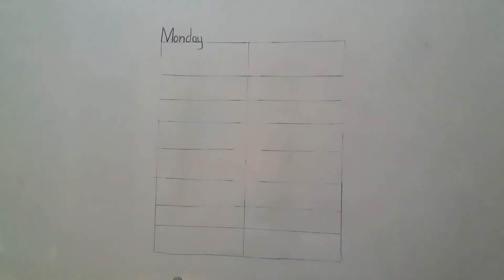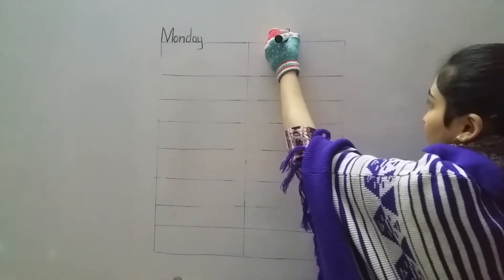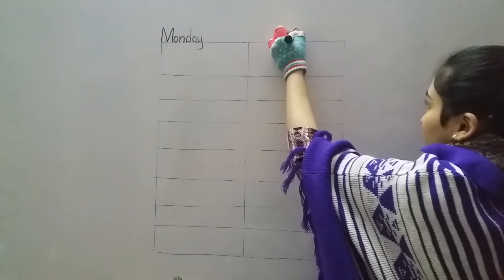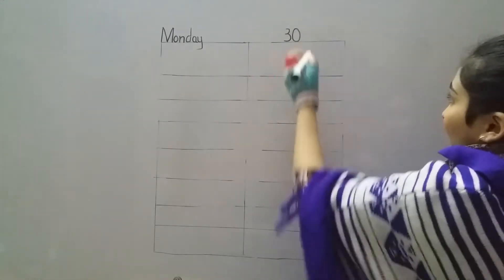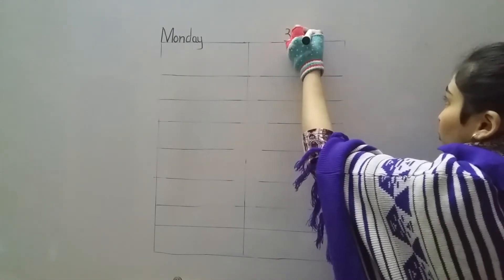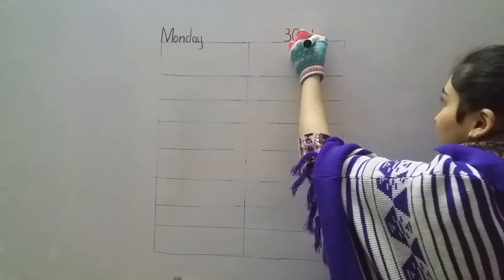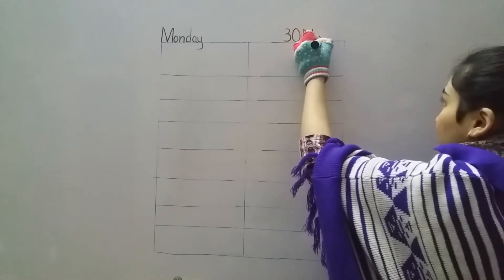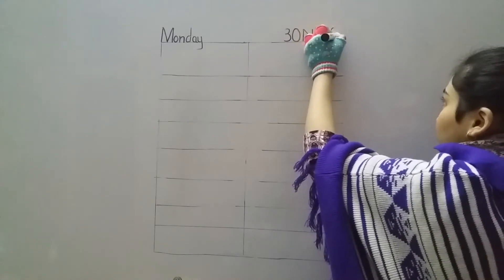Now when we are done with our day, we will write the date. Today is 30 — 3, 0 — 30. And it's in November. Joining two lines like this: N, O, V — November. The year is 2020.